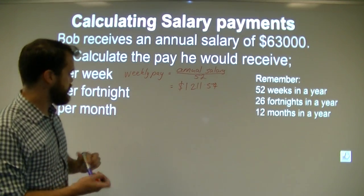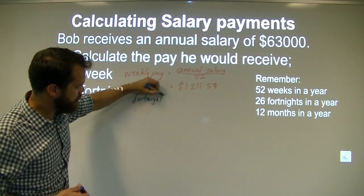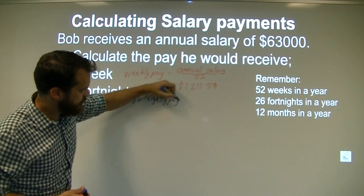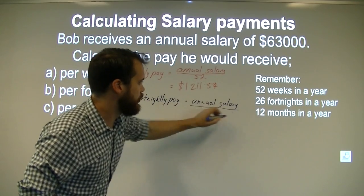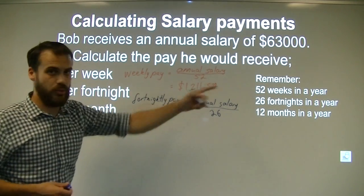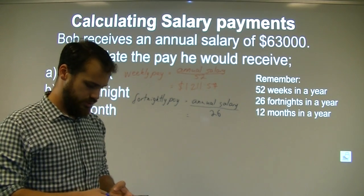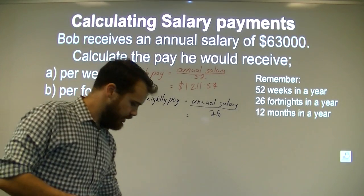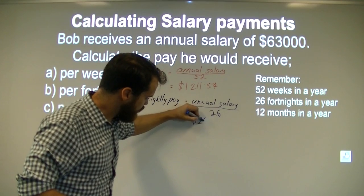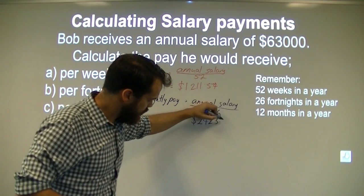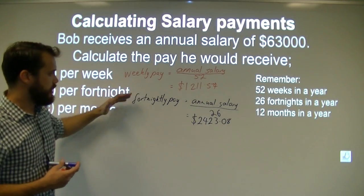Per fortnight is our second question. The fortnightly pay will be equal to the annual salary divided by 26, because there are 26 fortnights in a year. That gives us an answer of $2,423.08. So there's our weekly one and our fortnightly one.